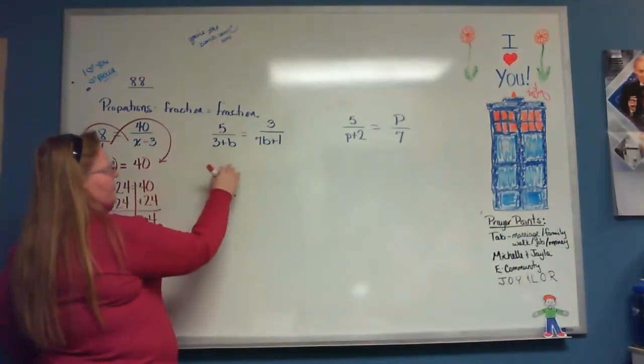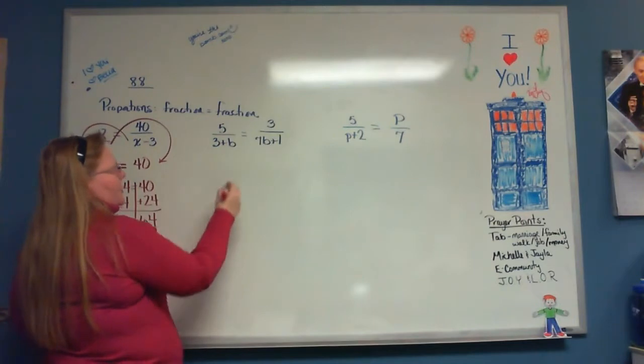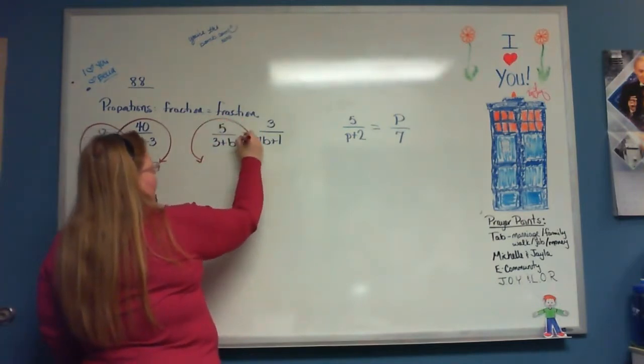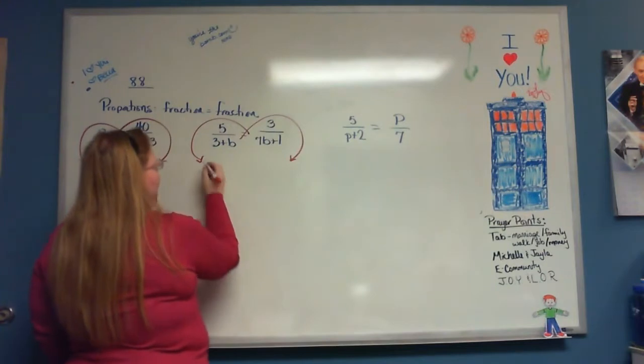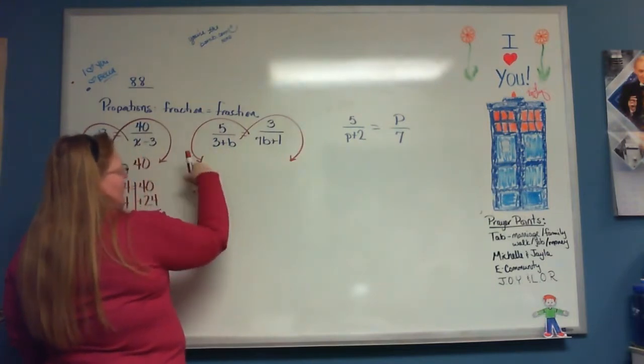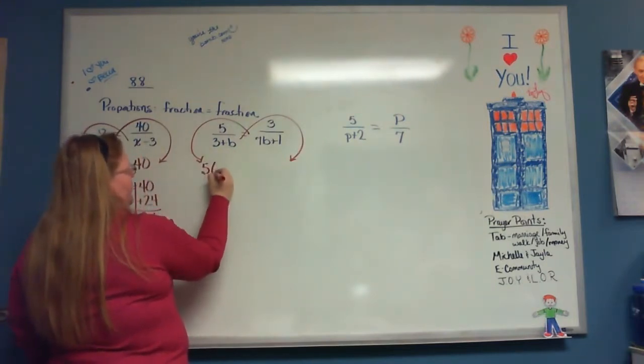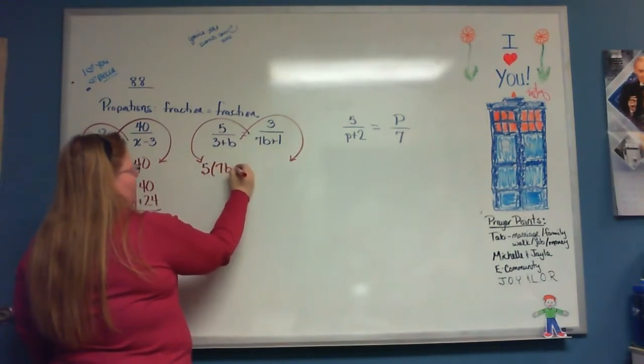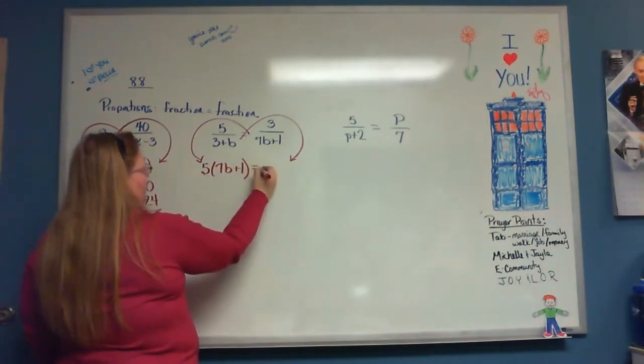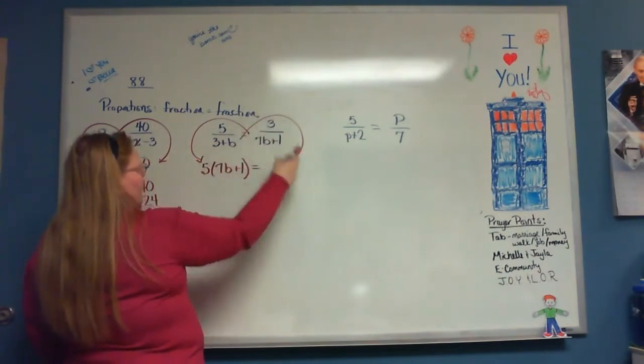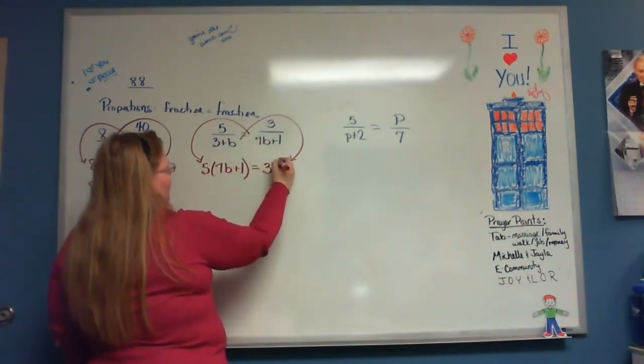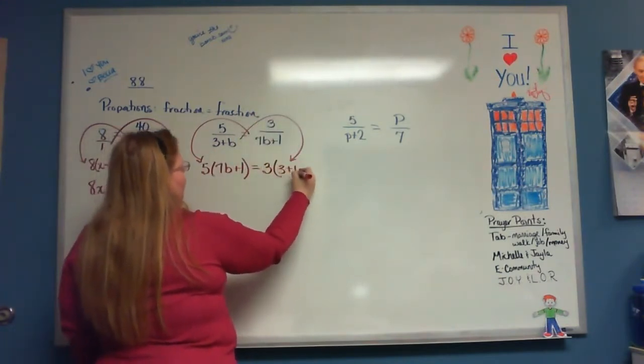Okay, so for this one, once again, we have a fraction equal to a fraction. So that allows me to cross multiply. So on this side, I have my 5 times 7b plus 1 equals, because it was an equal sign. On the other side, I have my 3 times 3 plus b.